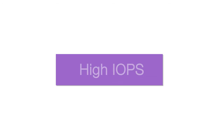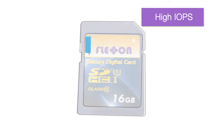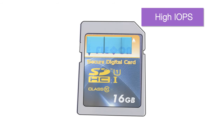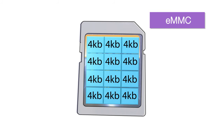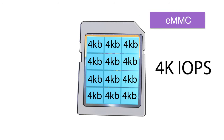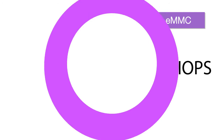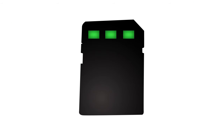Next is our high IOPS function. The page mode architecture in FlexOn's flash cards allows eMMC-like random performance, giving a high throughput of 4K IOPS. To amp up read and write performance, FlexOn flash cards use Pseudo-SLC mode flash.